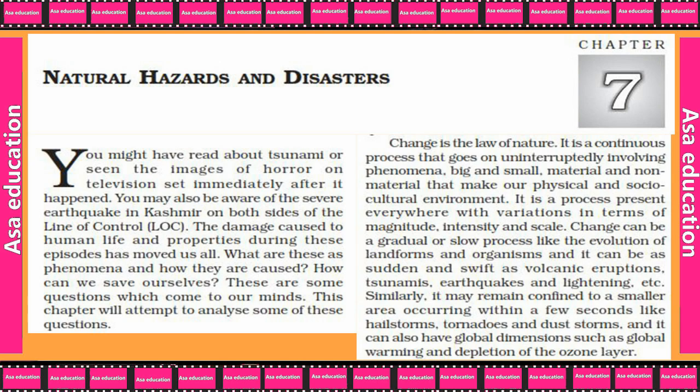Change can be a gradual or slow process, like the evolution of landforms and organisms. And it can be as sudden and swift as volcanic eruptions, tsunami, earthquake, and lightning. It may also remain confined to a smaller area, occurring within a few seconds, like hailstorms, tornadoes and dust storms. Or it can have global dimensions, such as global warming and depletion of the ozone layer.